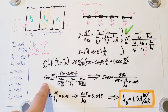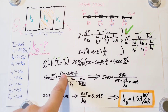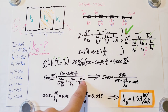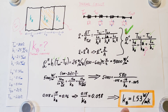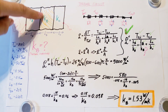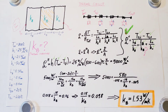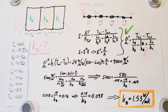Now the flux is no longer unknown — we found it. The only remaining unknown is KB. Let's go ahead and solve for that. Plugging in all the values we have and simplifying, we can finally solve for KB. The thermal conductivity of material B, the one in the middle, is 1.53 watts per meter Kelvin.